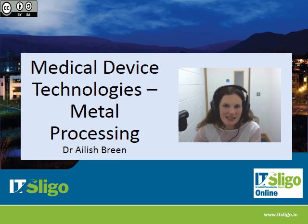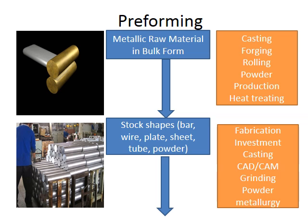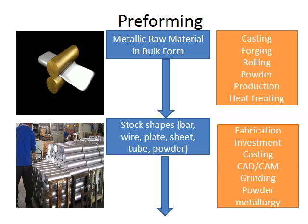Hello. The next section is on metal processing and I'm going to cover the different types of processing techniques that are used in the medical device manufacturing industry to make metal components. So first up, let's look at what happens in the first instance. The metallic raw material comes in bulk form and it can be either cast or forged, rolled, put into powder production, or heat treated.